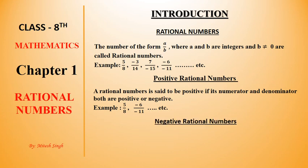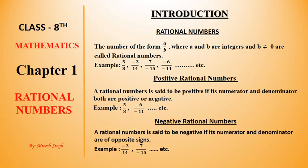Next point: Negative Rational Numbers. A rational number is said to be negative if its numerator and denominator are of opposite signs.